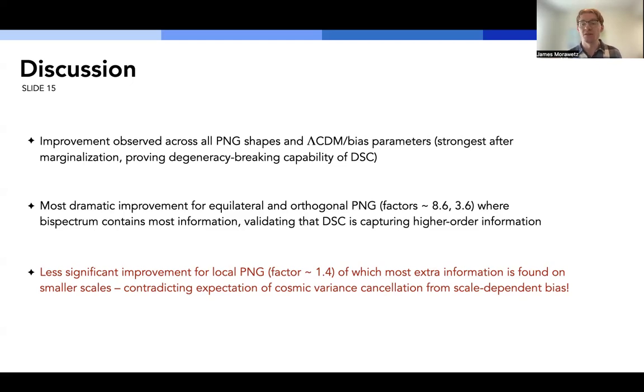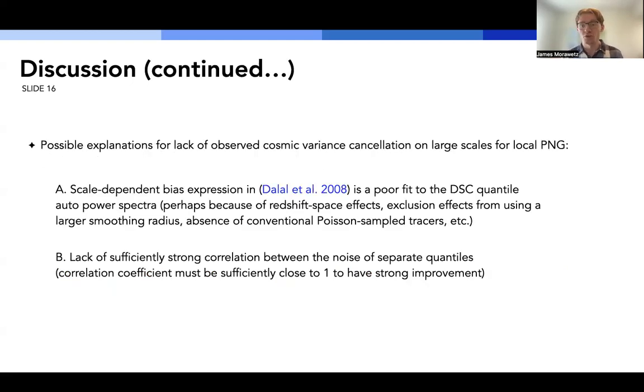One of the more surprising results, though, is that we don't observe as strong improvement for local PNG. We observe only about a factor of 1.4. And it turns out most of this extra information is actually found on smaller scales, which contradicts the expectation that we'd see significant cosmic variance cancellation due to the scale-dependent bias.